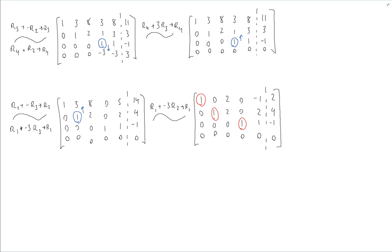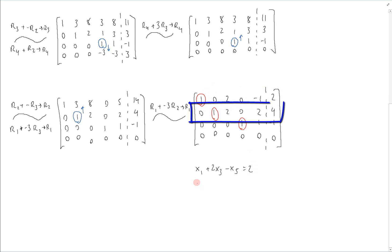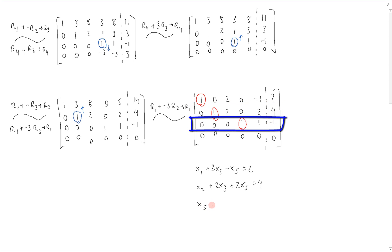So now we can write out the solutions by looking at what these equations actually say. We have x1 plus 2x3 minus x5 equals 2 from the first row. Then x2 plus 2x3 plus 2x5 equals 4 from the second row. And x4 plus x5 equals negative 1. So we have three basic variables — x1, x2, and x4 — corresponding to the pivot columns, and two free variables — x3 and x5 — corresponding to the non-pivot columns.